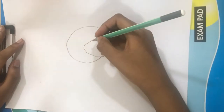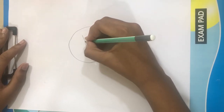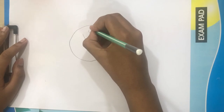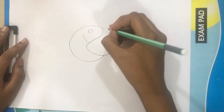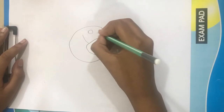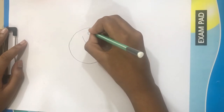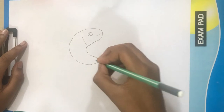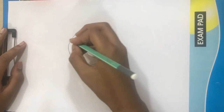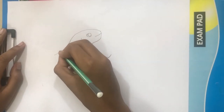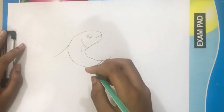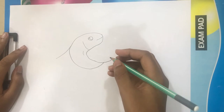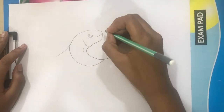The third step is to draw the face. The fourth step is to draw the lips.